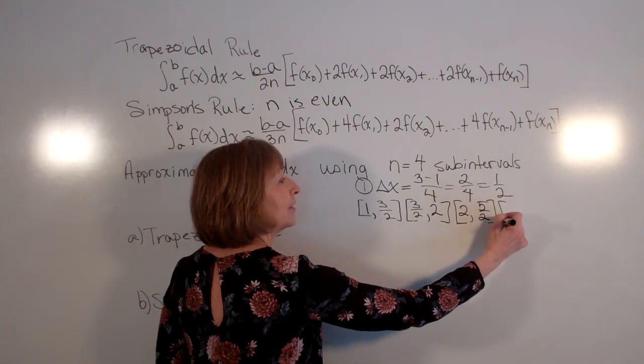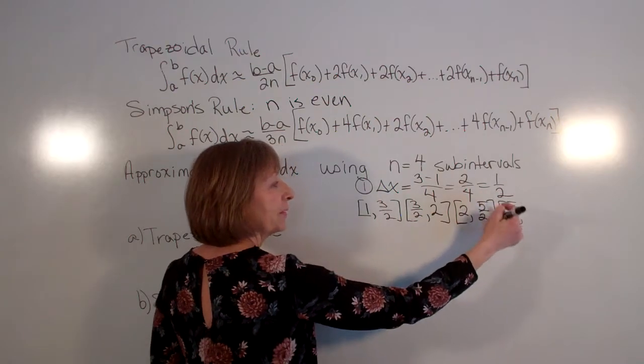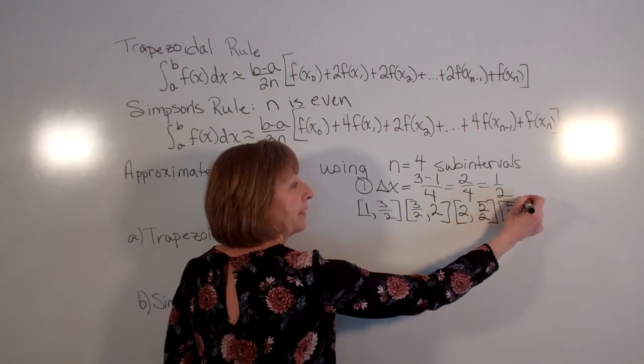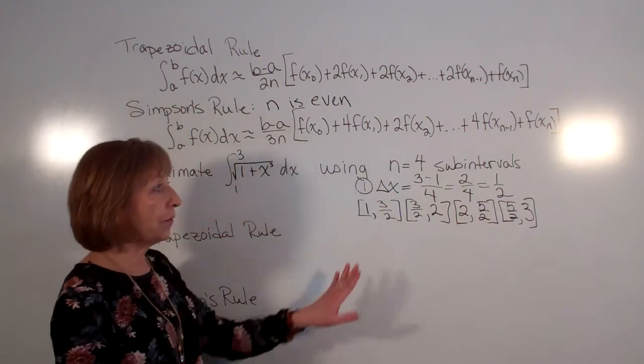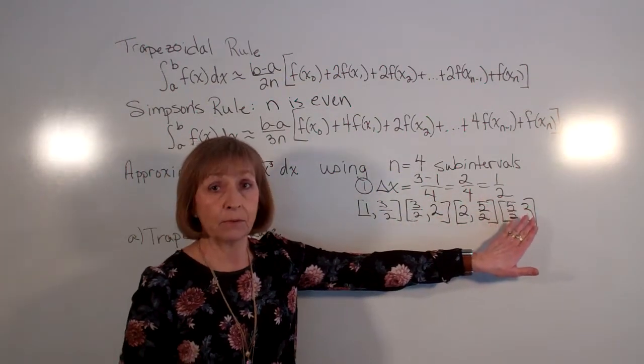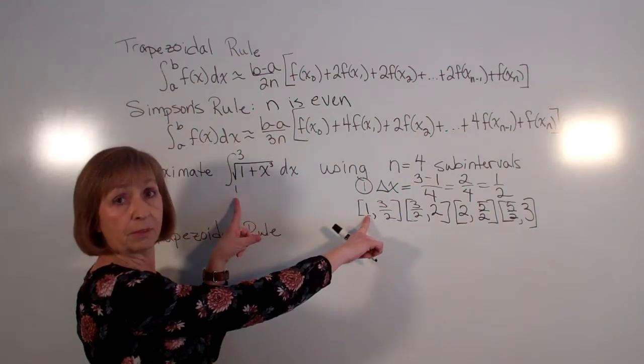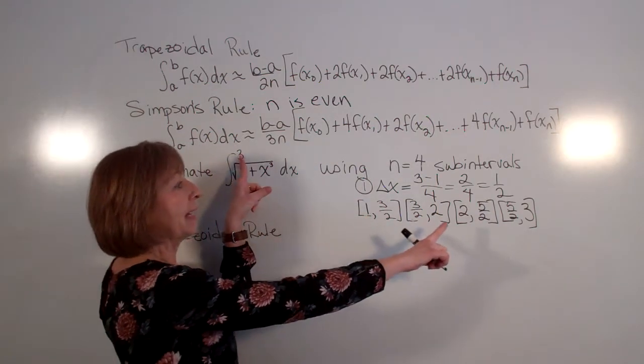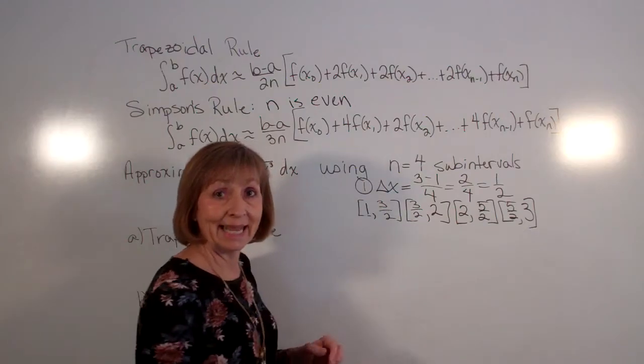And then starts at 2 and 2 plus 1 half is 5 halves. And then starts at 5 halves. And 5 halves plus 1 half is 6 halves, which is 3. So notice it said n equals 4 and I have 1, 2, 3, 4 sub-intervals. My first sub-interval started at 1, my last sub-interval ended at 3.